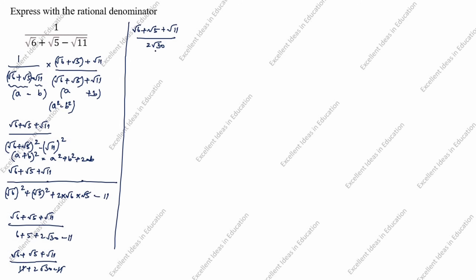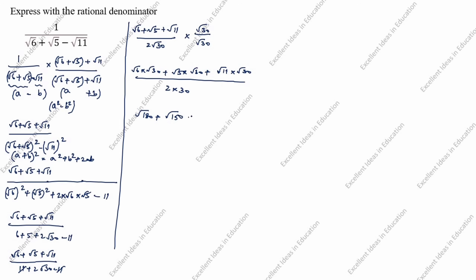You see the denominator — denominator has root 30, which is irrational. Again, we will rationalize the denominator. Multiply by root 30 divided by root 30. So: root 6 into root 30 plus root 5 into root 30 plus root 11 into root 30 divided by root 6 into root 30 equals 30. Multiply: 6 into 30 is root 180, plus 5 into 30 is root 150, plus root 11 into root 30 is root 330, divided by 60.